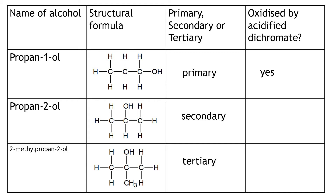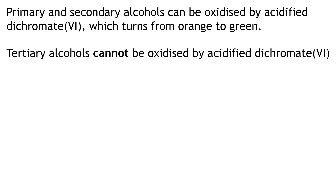Secondary alcohols, such as propan-2-ol, can also be oxidised by acidified dichromate. However, tertiary alcohols, such as 2-methylpropan-2-ol, cannot be oxidised by acidified dichromate. So we can conclude that primary and secondary alcohols can be oxidised by acidified dichromate, which turns from orange to green, while tertiary alcohols cannot be oxidised by acidified dichromate.